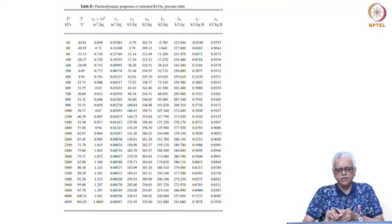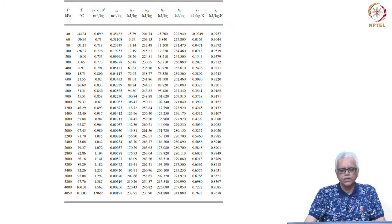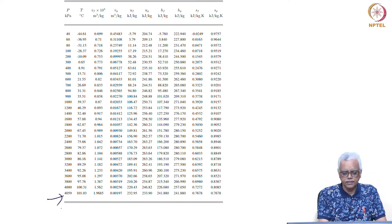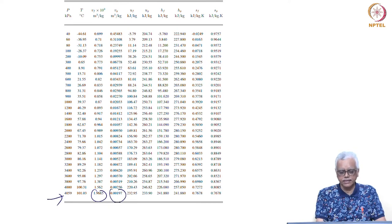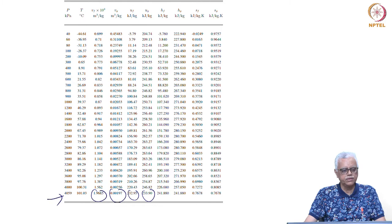Here we have the properties of saturated R134A from the pressure table. We can see this is the critical state, where the specific volume of the liquid and specific volume of the vapour are both the same. The specific internal energy of the liquid and the vapour are also the same at the critical state. So the specific volume at the final state is known, and we can use this information to carry out the analysis.